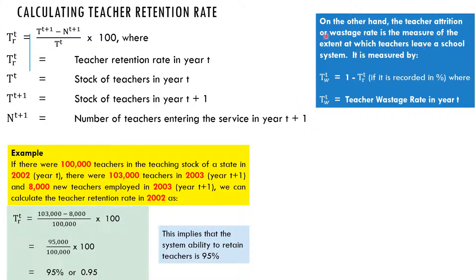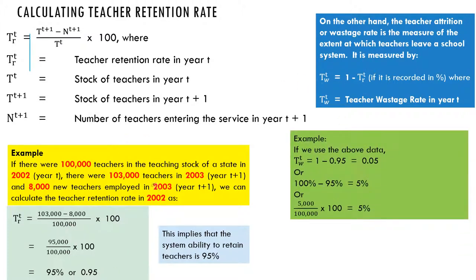On the other hand, the teacher's attrition or wastage rate is measured by the extent to which teachers leave a school system. Because you would have spent money on these teachers — to train them, to upgrade them — so if they leave, it becomes a wastage to that school. You determine this as T^t_w, the teacher wastage rate in year t, which equals 1 minus T^t_r. So using our example, that means 1 minus 0.95, which gives us 5 percent.